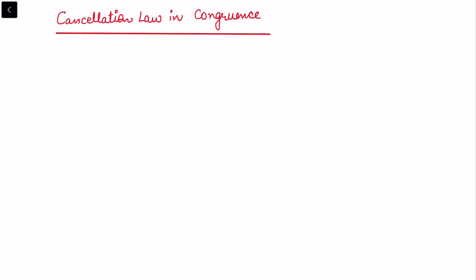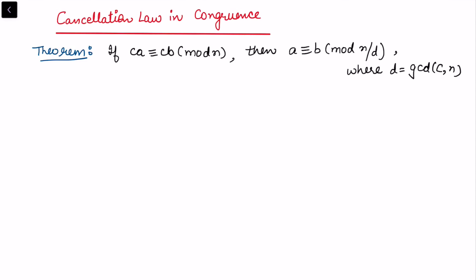In this video I will be talking on the cancellation law in congruences. Let's write down the theorem to understand this law and then we'll take some examples. It states: if ca is congruent to cb modulo n, then a is congruent to b modulo n/d, where d is the gcd of c and n. So if I need to cancel the c, we need to look at what is the gcd of c and n.